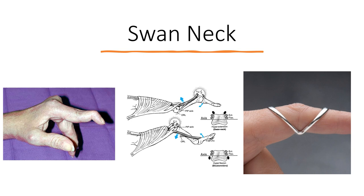Swan neck deformity is usually the result of a hyperextension deformity of the PIPJ and can be seen in mallet finger due to a rupture of the terminal slip. It can also be due to a rupture of the FDS, causing a loss of balance in the PIPJ and resulting in a hyperextension deformity. So the primary deformity in a swan neck is a hyperextension of the PIPJ. The secondary deformity is a flexion of the DIPJ - usually the result of the hyperextension of the PIPJ creating a cam-like effect, so the FDP has to travel a greater distance, resulting in an effective shortening of the FDP that produces the DIP flexion deformity.